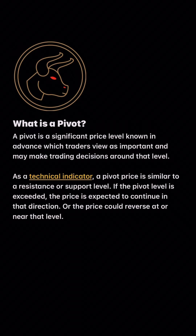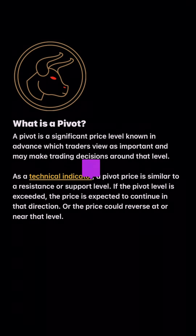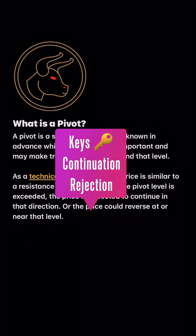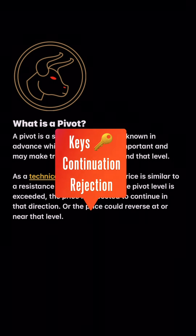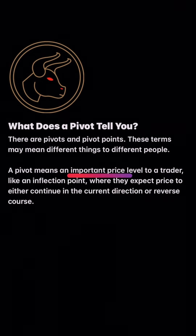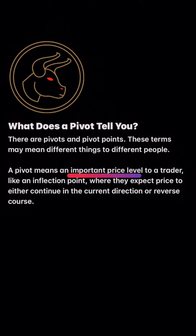So what is a pivot? A pivot is a significant price level known in advance which traders use as an important level to make trading decisions around that particular level. As a technical indicator, a pivot price is similar to support and resistance. If the pivot level is exceeded, the price is expected to continue in that direction, or the price could reverse at a near level. So with pivoting, we're looking at continuation and rejection points. A pivot means an important price level to a trader — an inflection point where they expect price to either continue in the current direction or reverse the course.